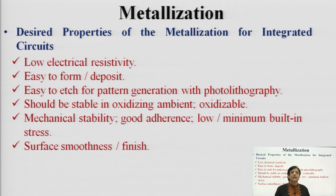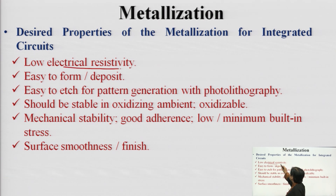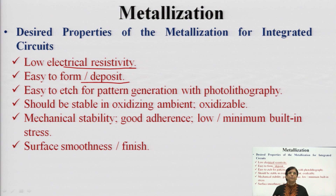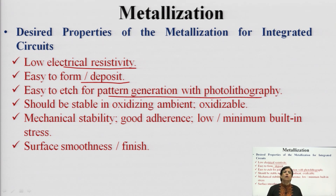To attain these, what are the desirable properties? The very first property is minimum electrical resistivity. The contact should offer minimum resistance and maximum conductivity, carrying all charge carriers through it. Secondly, it should be easy to deposit — the deposition process should be easy. Third, it should be easy to etch: for pattern generation or modification, it should be easily etched or eliminated by proper processes.